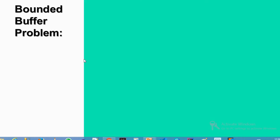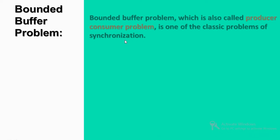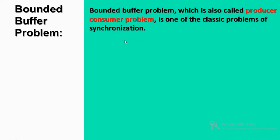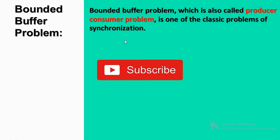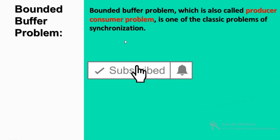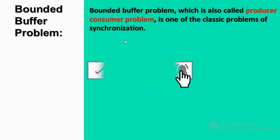Hello everybody. What are we going to talk about in this video? What is the bounded buffer problem? What are semaphores and types of semaphores? Types of semaphores include binary semaphore and counting semaphore. Our bounded buffer problem is also called the producer-consumer problem. It is one of the classic problems of synchronization. There are three classic problems of synchronization, and the first one is the bounded buffer problem, also called the producer-consumer problem.